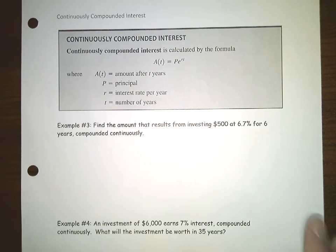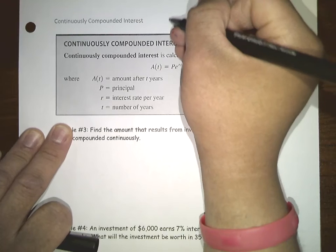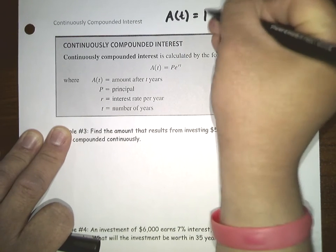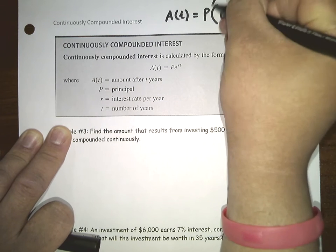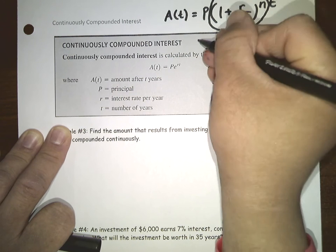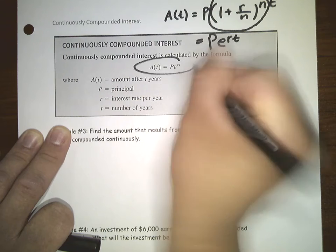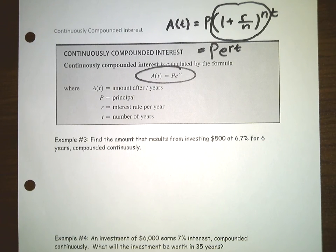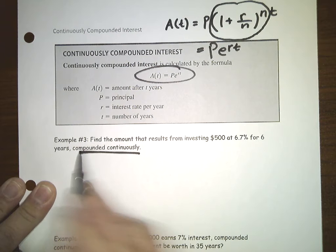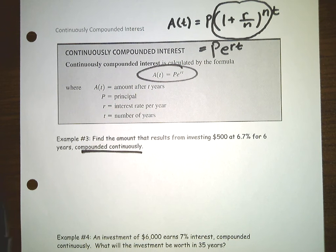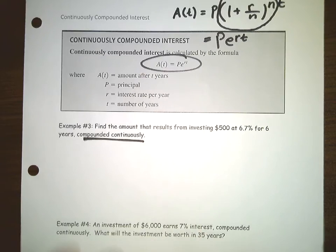Continuously compounded interest: if you remember the interest formula, it was A of T equals P times (1 plus r over n) to the n times t. That part was approximately e to the r, giving P times e to the r times t — so the continuously compounded formula is A equals P e to the r t. This gives the most interest possible, compounded continuously — that is, infinitely many times.